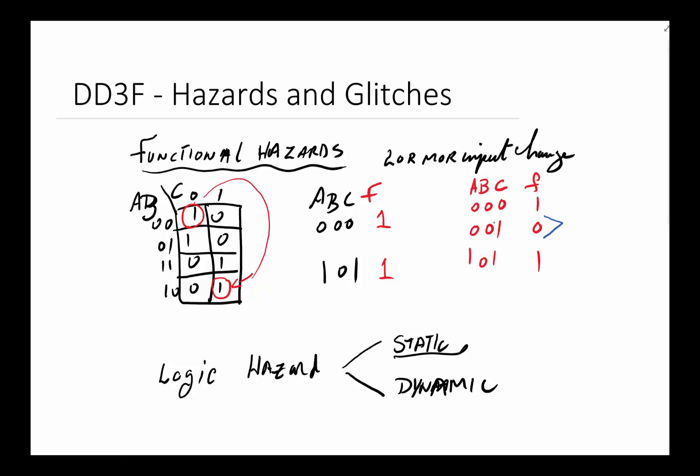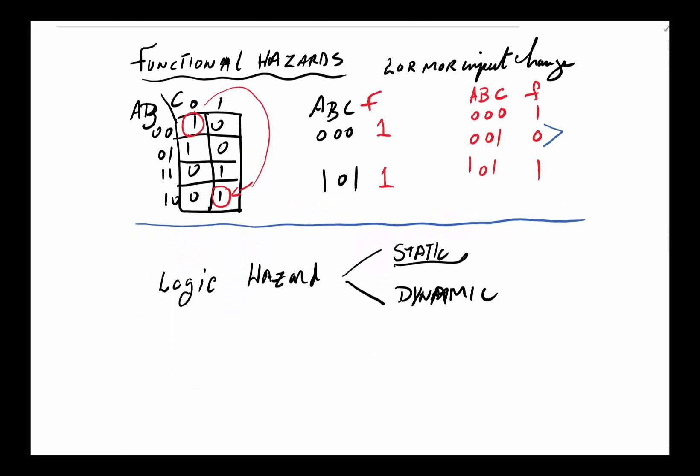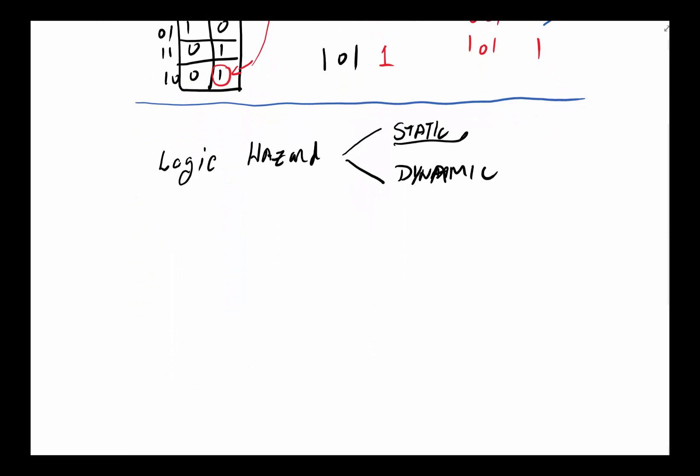So the bottom line is: when you have a functional hazard, inputs may change at different rates and you will get an unintended output glitch. The problem is caused by inputs not changing all at the same time. We really can't add any circuitry to our device to fix this problem. However, later we'll talk about flip-flops and synchronization — one way is through having a clock that forces everybody to change at the same time.